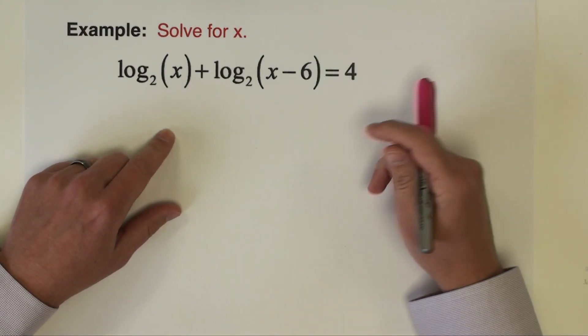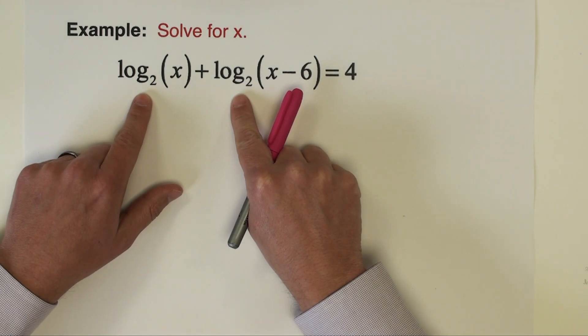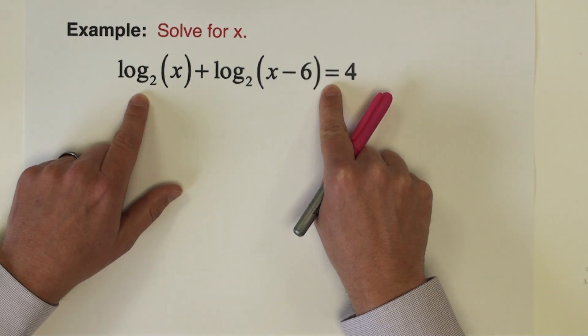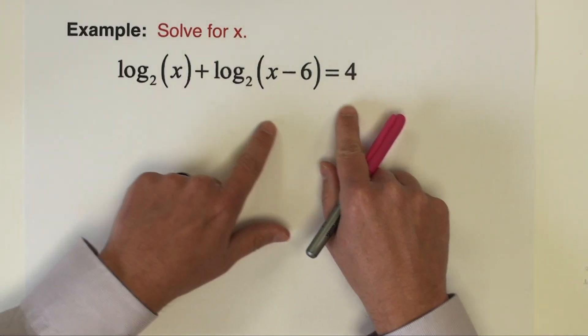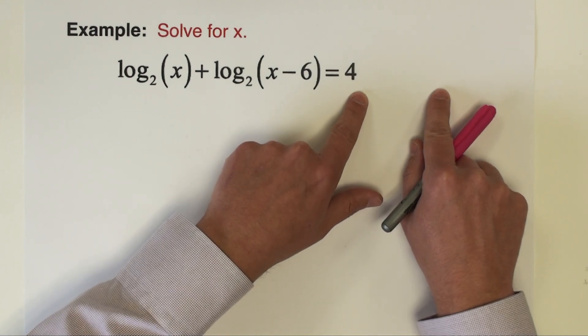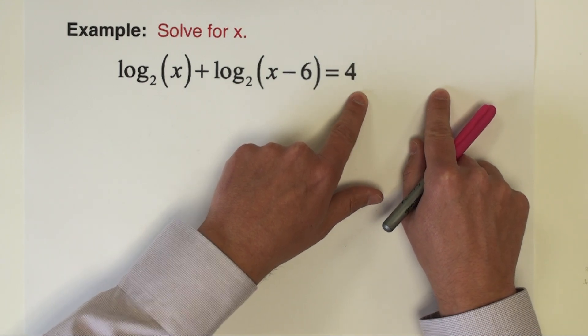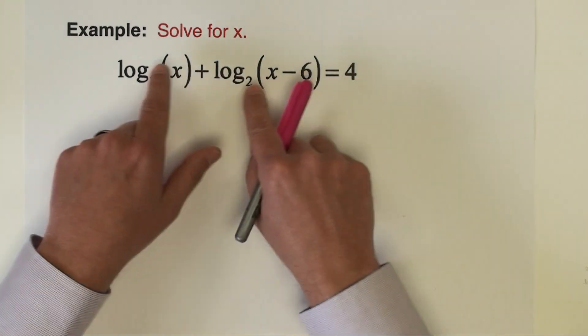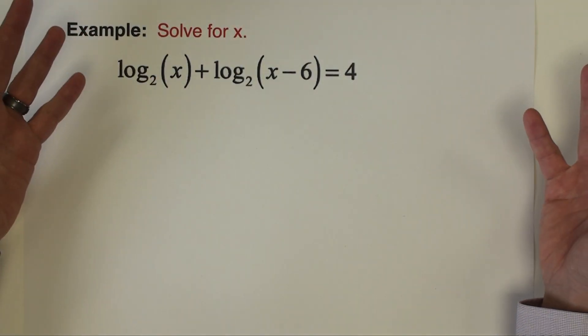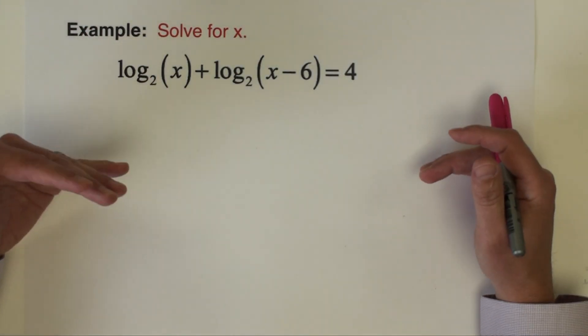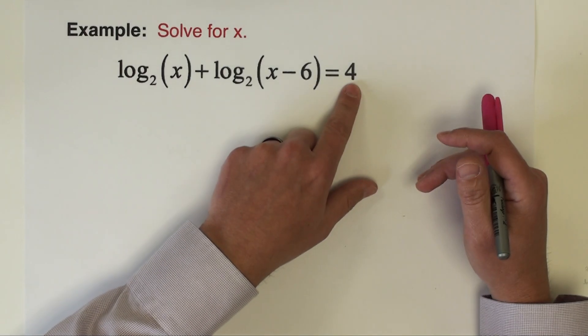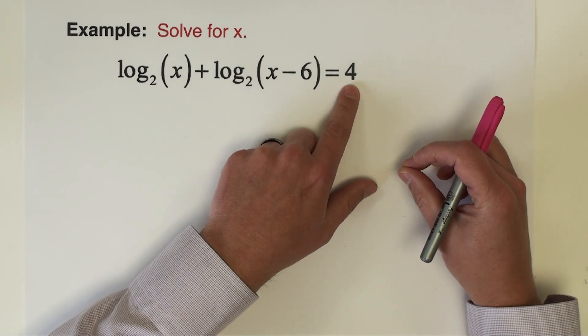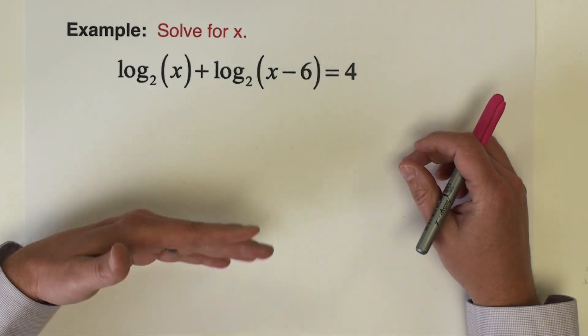Second example problem. Like the first we've got two logarithms, but different from the first, these logarithms are on the same side of the equal sign. I could move this logarithm over to the other side so I'd have one on each side like the last problem. However, this 4 here is going to be added or subtracted to one side, and it's muddying things up a little bit. I can't present this like the last example because that 4 is there.